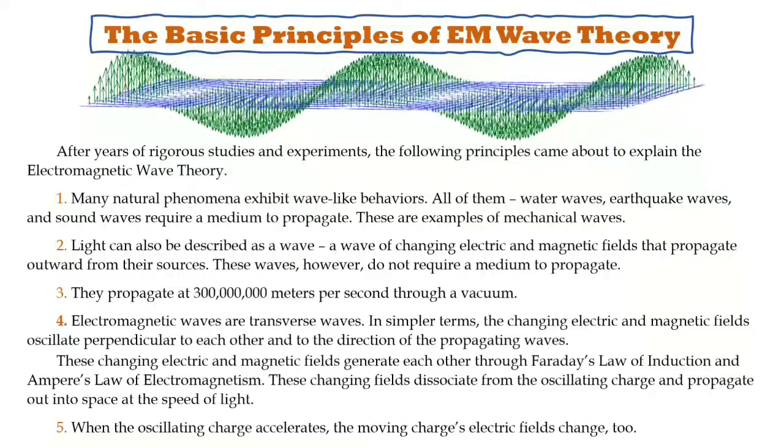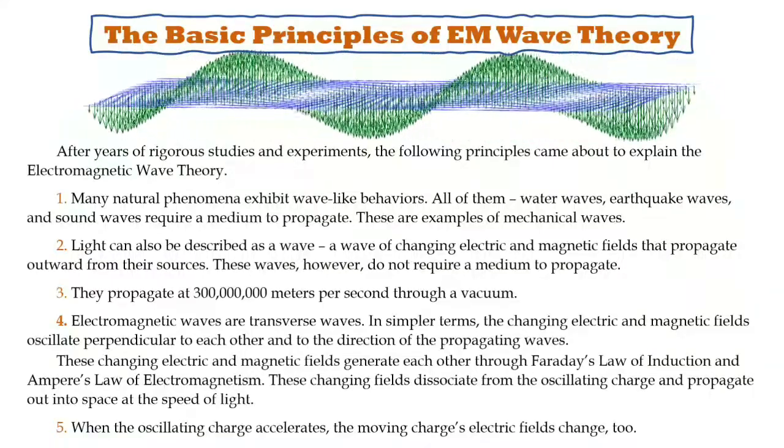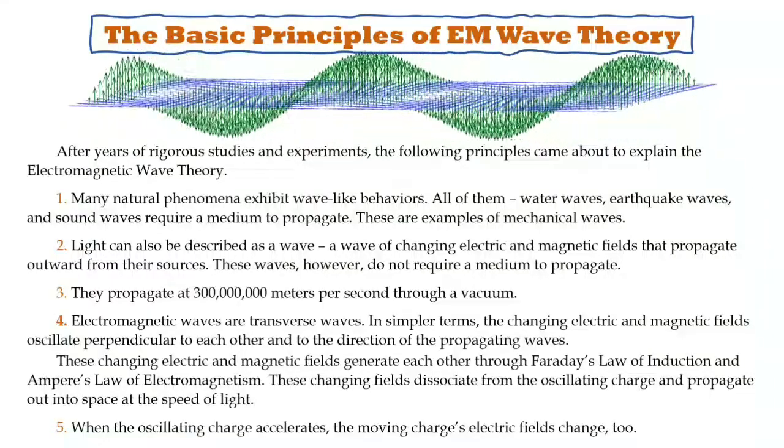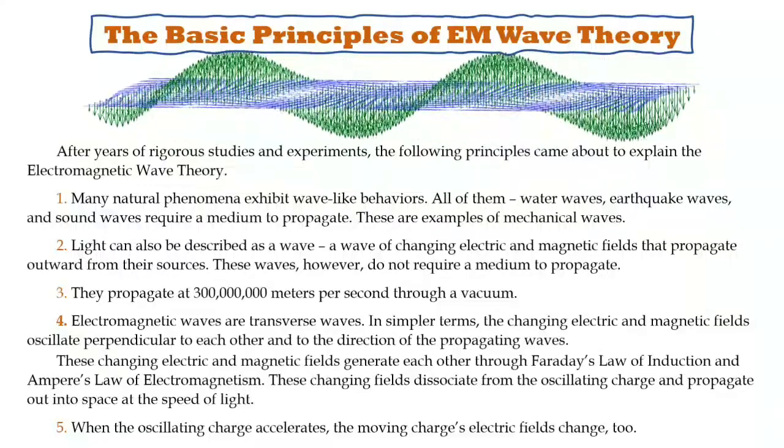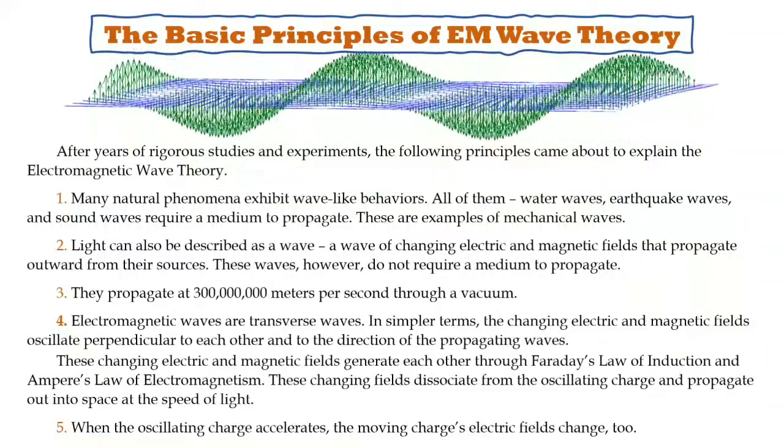Number two: Light can also be described as a wave. A wave of changing electric and magnetic fields that propagate outward from their sources. These waves, however, do not require a medium to propagate.